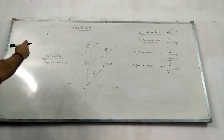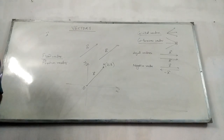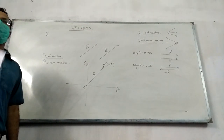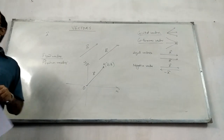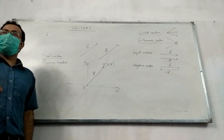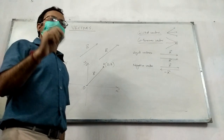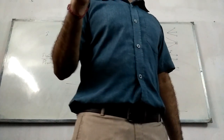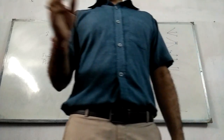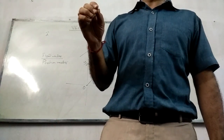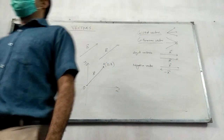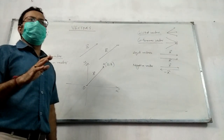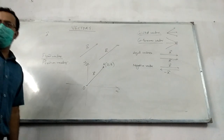So, position vector is a fixed vector that starts from the origin and ends at the designated position. These are all the definitions you need to know.